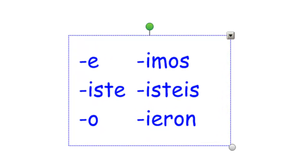These are the endings: e, iste, o, imos, isteis, ieron. There are no accents on any of these. We use these same endings for all four verbs. It doesn't matter what the original endings of the verbs are — whether AR or ER — they all follow this pattern.